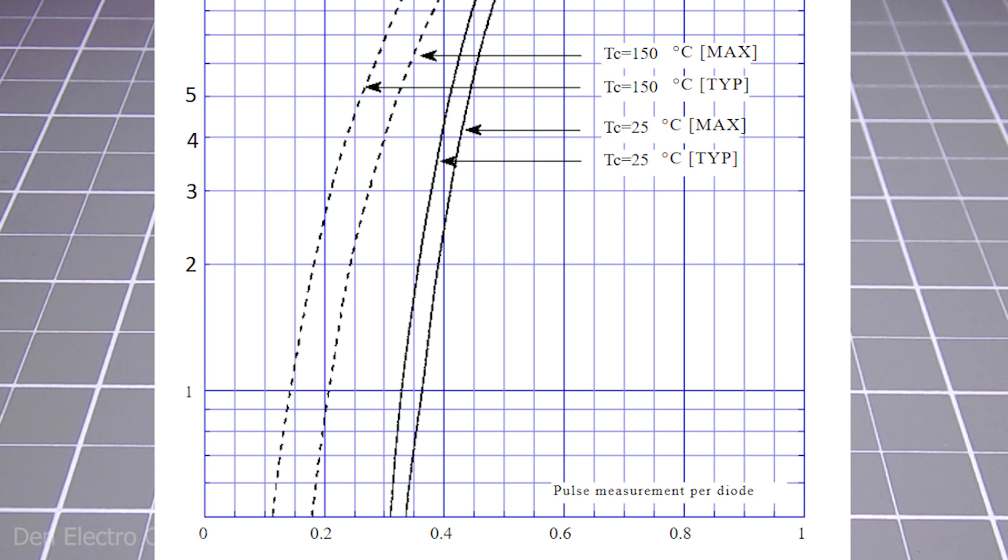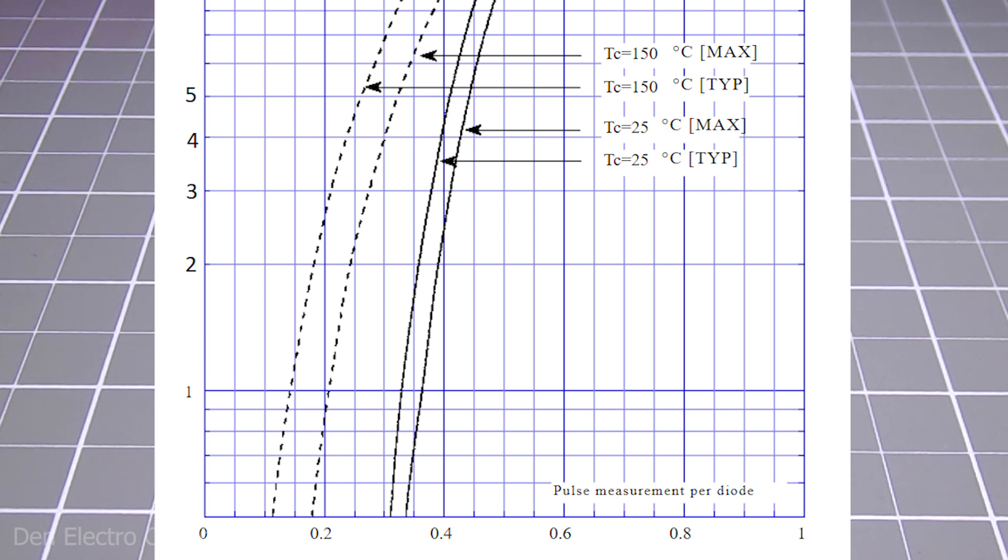Two values are shown for each temperature, typical and maximum. This is due to the fact that there are no two identical diodes. They can always have a discrepancy in parameters.